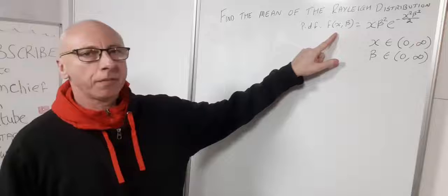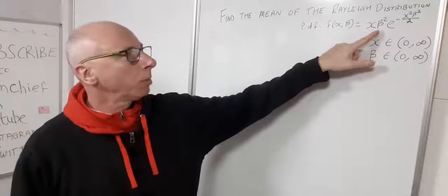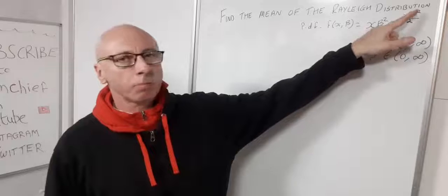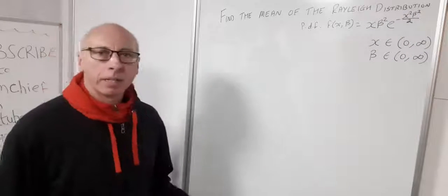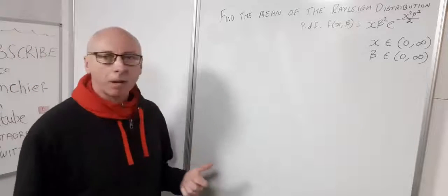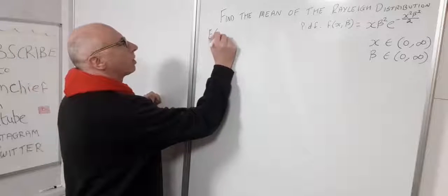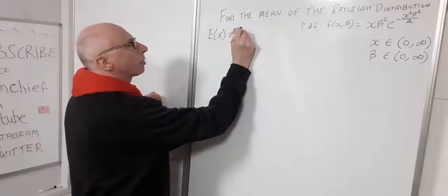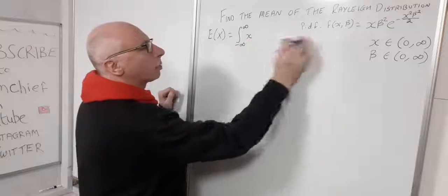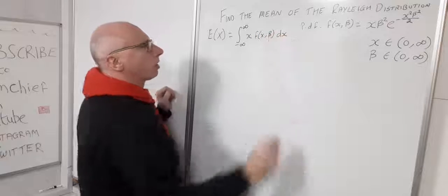To start with we have the PDF of the Rayleigh distribution: x times beta squared — where x is our random variable and beta squared is our scale parameter — times the exponential function e to the minus x squared beta squared over 2. That's our PDF. The mean of any distribution is found using integration: E(x) equals the integral from negative infinity to infinity of x multiplied by the PDF, f(x|beta), with respect to x.